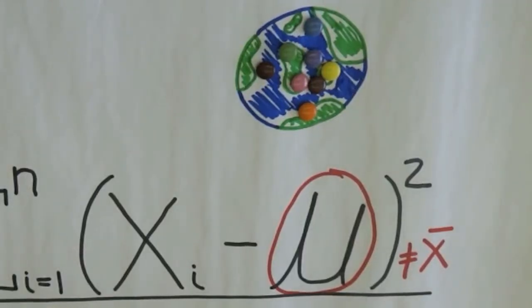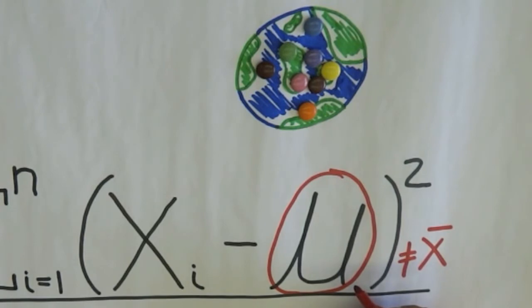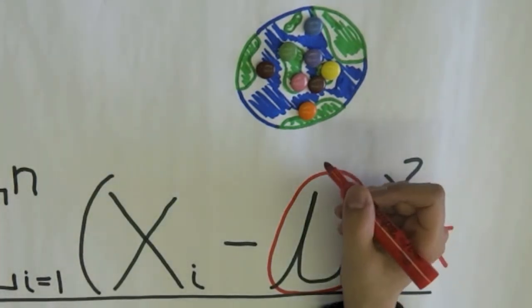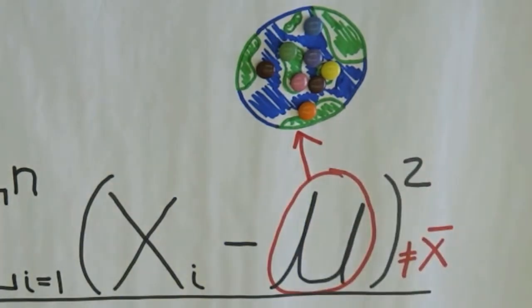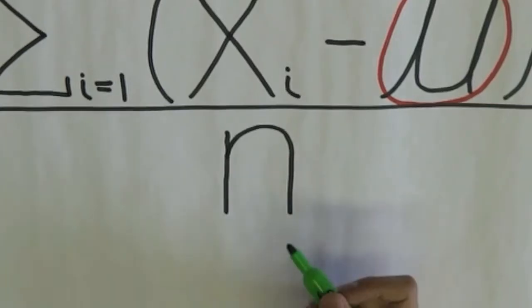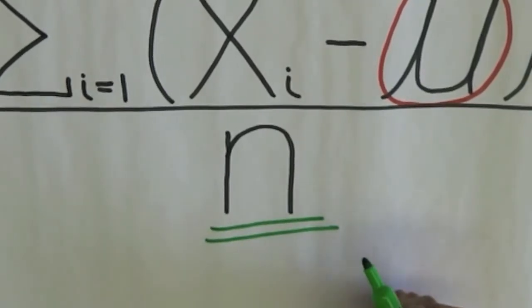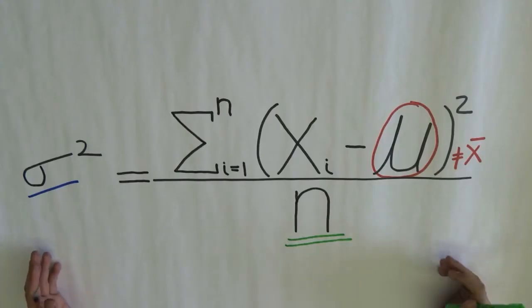For example, I would get my population mean if I could measure the weight of all the smarties in the world and find their average. Note that I am using n and not n minus 1. And this is the formula for population variance.